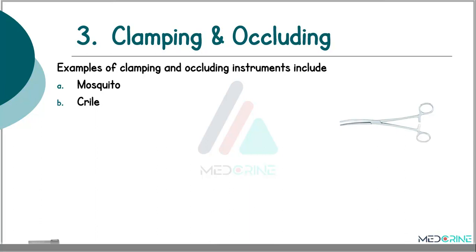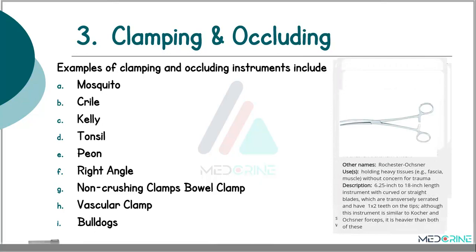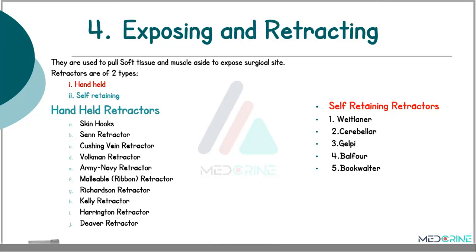Examples of clamping and occluding instruments include mosquito forceps, Crile forceps, Kelly artery forceps or Kelly hemostatic forceps, tonsil forceps, Pean, right-angled forceps, non-crushing bowel clamps, vascular clamps and bulldogs.